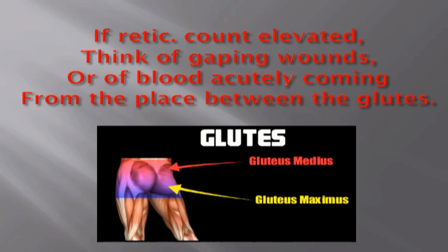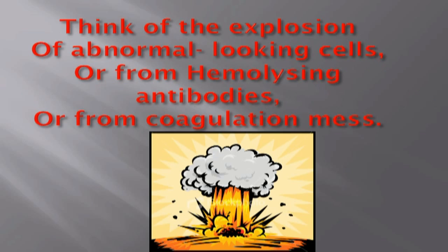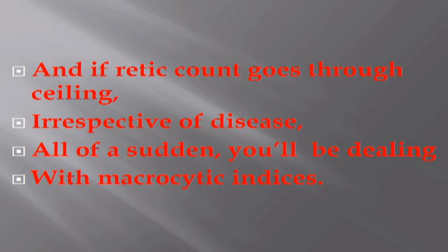Every reticulocyte count elevated — think of acute bleeding, or of blood acutely coming from the GI tract. Think of the explosion of abnormal-looking cells, or from hemolyzing antibodies, or from coagulation mass.